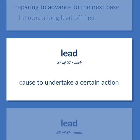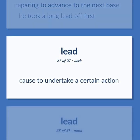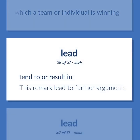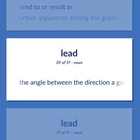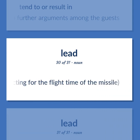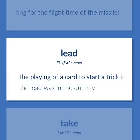A position of being the initiator of something and an example that others will follow — especially in the phrase 'take the lead.' He takes the lead in any group. Baseball: the position taken by a base runner preparing to advance to the next base. He took a long lead off first. Cause to undertake a certain action. Sports: the score by which a team or individual is winning. Tend to a result in. This remark lead to further arguments among the guests. The angle between the direction a gun is aimed and the position of a moving target — correcting for the flight time of the missile. The playing of a card to start a trick in bridge. The lead was in the dummy.